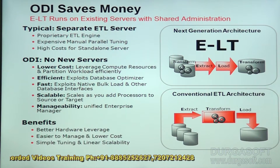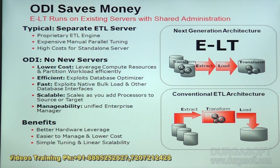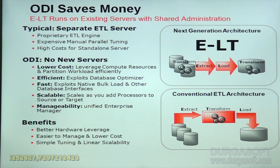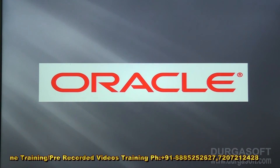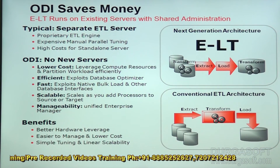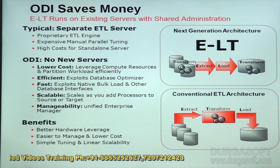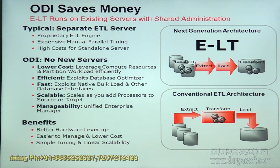ODI saves money. ETL runs on existing servers with shared administration. With the new-generation ELT architecture, transformation and extraction can be done at the source, and transformation, extraction, and load can all be done at the target. The benefits are better hardware leverage, easier management, lower cost, simpler tuning, and linear scalability. This is how Oracle Data Integrator saves organizations money, time, and complexity — reducing overhead when used as an alternative to ETL tools like Informatica.